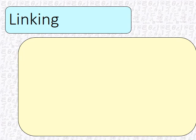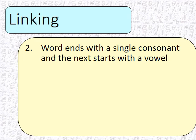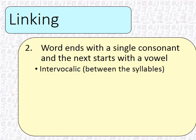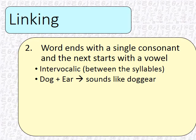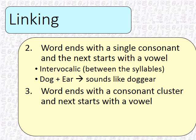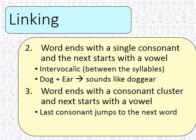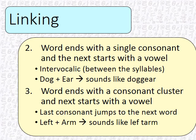The second and third forms of linking are on this slide. Words that end with a single consonant and start with a vowel — between the syllables, there will actually be a kind of jump between the last consonant and the beginning of the next, making it sound like a double consonant instead of a space. So 'dog and ear' often sounds like 'dog-ear.' Also, words that end with a consonant cluster and the next starts with a vowel — the last consonant jumps to the next word. An example is 'left arm': the T from 'left' tends to jump over to make it sound like 'left-arm.'